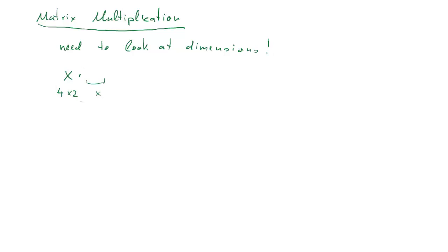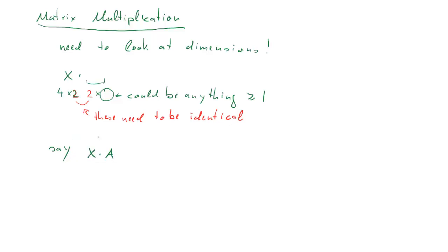We want to multiply that with some matrix that will have 2 dimensions. Now it turns out that this number of rows needs to be 2. These 2, let's call them the inner dimensions, need to be identical when you multiply matrices. That last dimension, number of columns, could be anything as long as it's larger than 1. So these 2 inner dimensions need to fit.